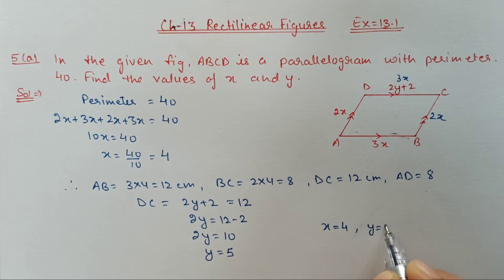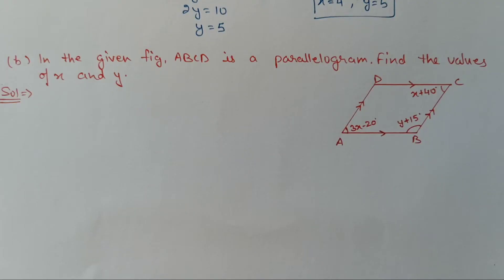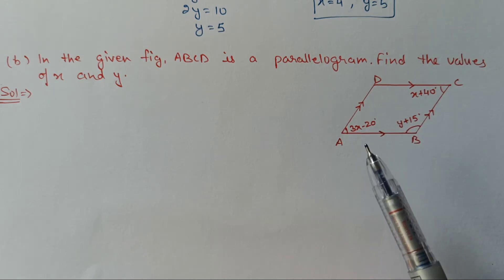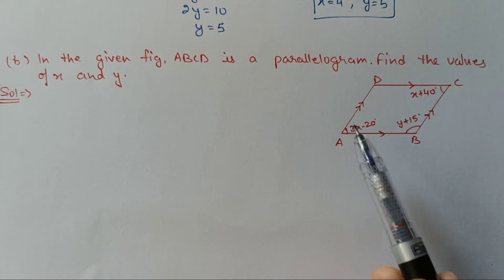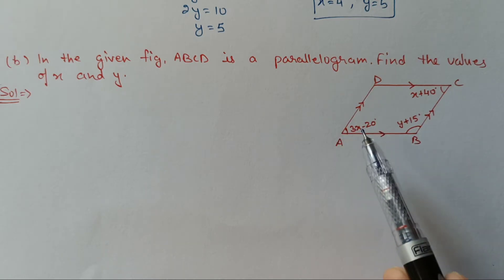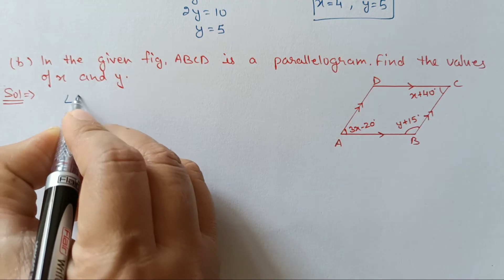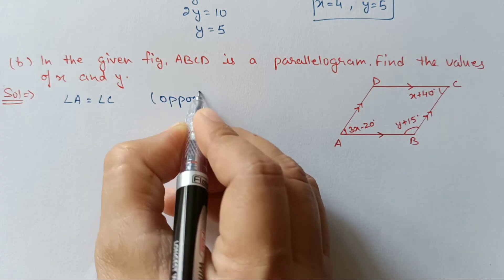Next, question number 5B. In the given figure ABCD is a parallelogram — find the value of X and Y. Angles are given in this figure, so we need to use the angle properties of a parallelogram. In a parallelogram, opposite angles are equal and adjacent angles are supplementary. First, we use opposite angles are equal: angle A equals angle C.